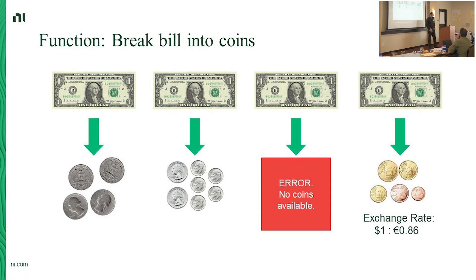Function 'break bill into coins': send in a bill, get coins back. Case 1: four quarters — reasonable. Case 2: two quarters and five dimes — still a correct amount. Case 3: 'no coins available, I've run out' — seems appropriate; giving an error back provides feedback about system state. Case 4: 86 cents in euros with an exchange rate card. Is that correct behavior? We don't know exactly what was specified as the job of this function.